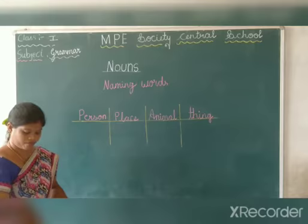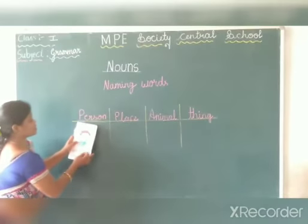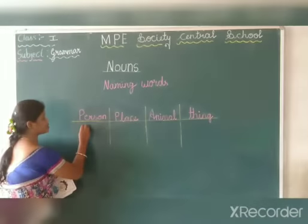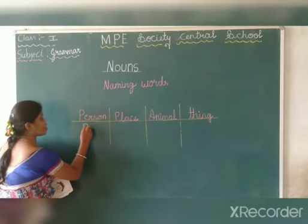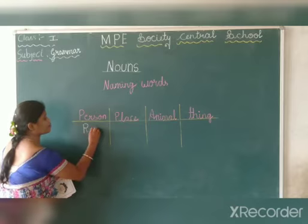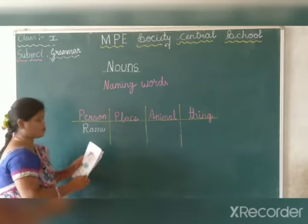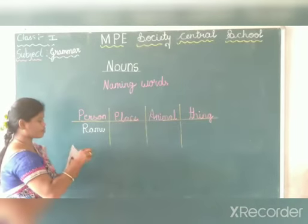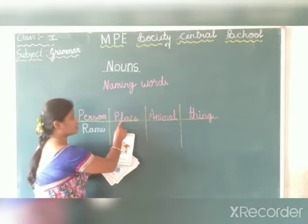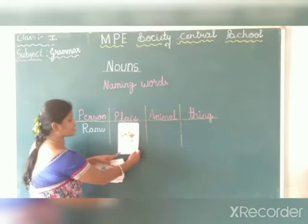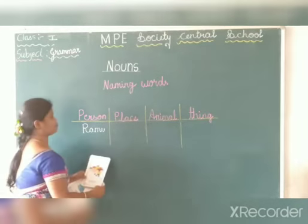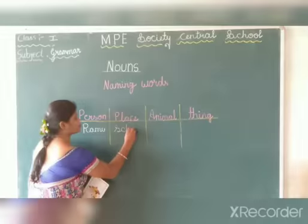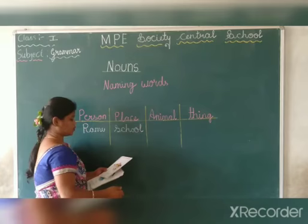Who is this? It's a person. What's his name? His name is Ramu — R-A-M-U, Ramu. Name of a place — school.